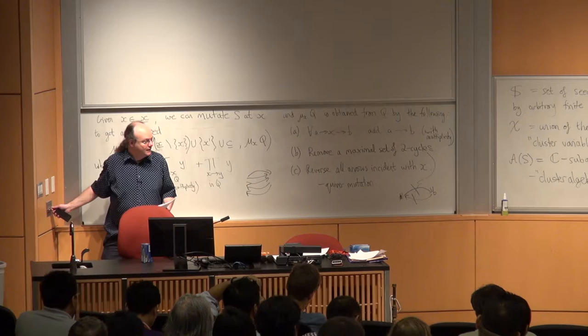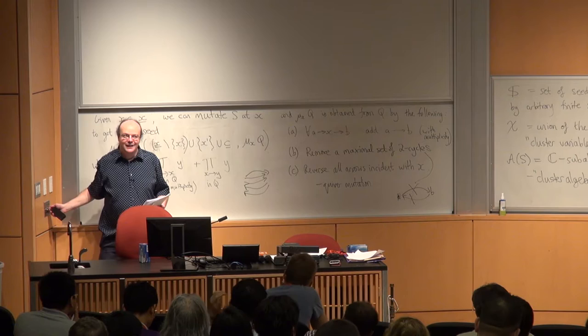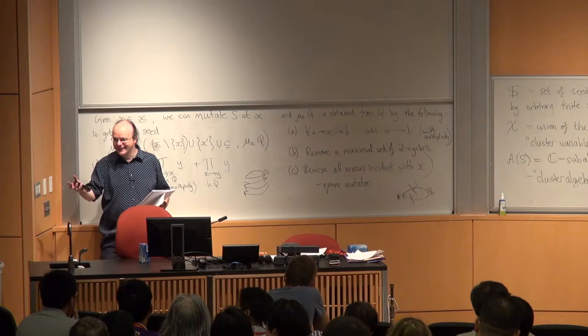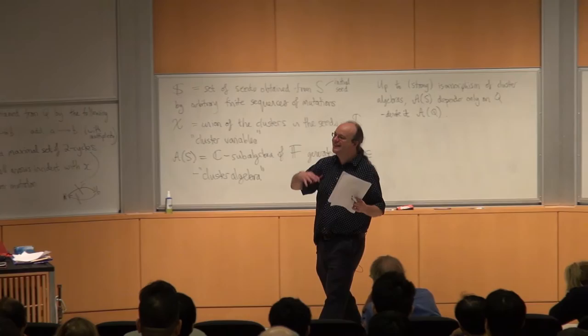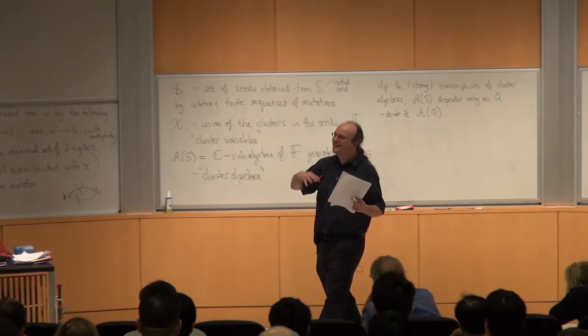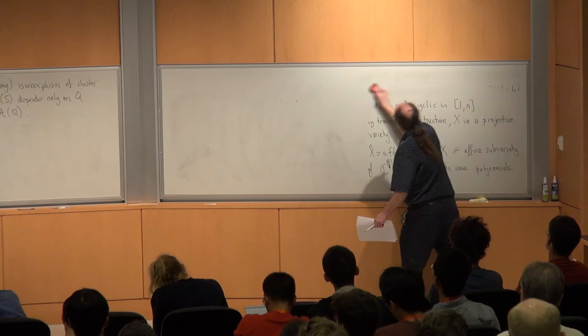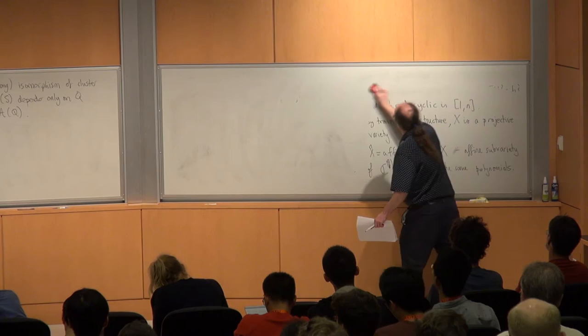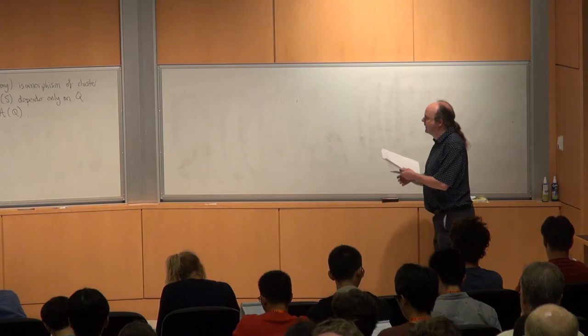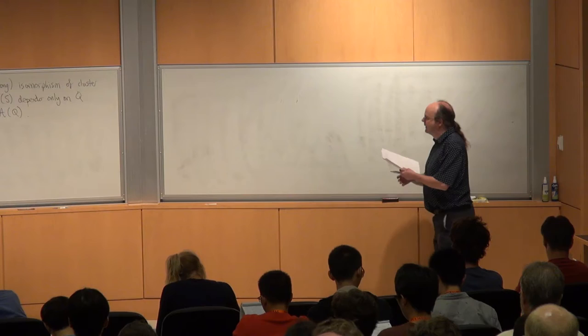The clusters don't include C in the middle of them — C is the extended cluster. X alone is the cluster, and X union C is the extended cluster. Some people might call X union C the cluster.